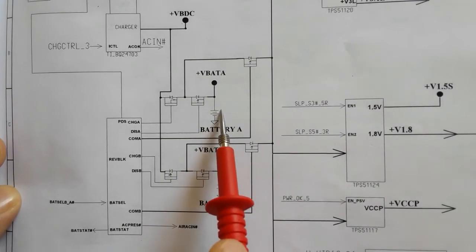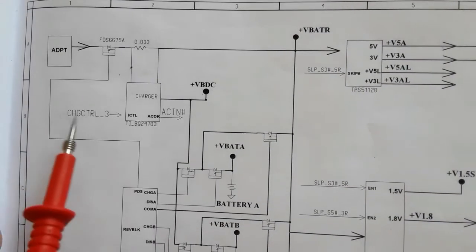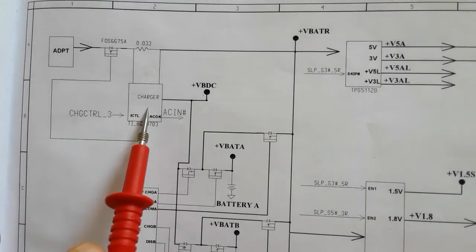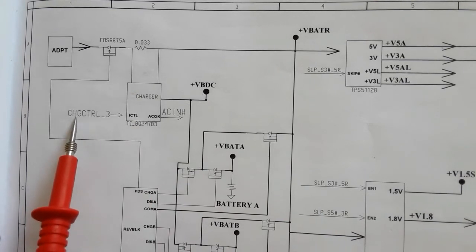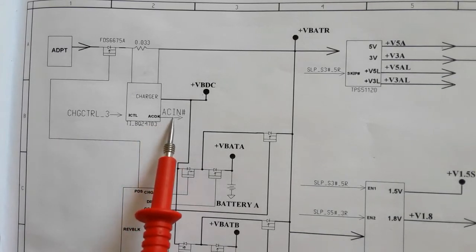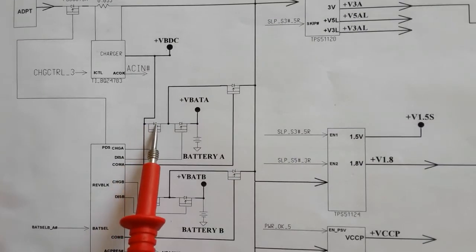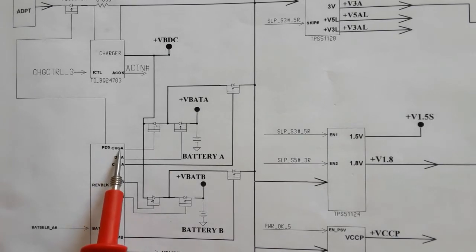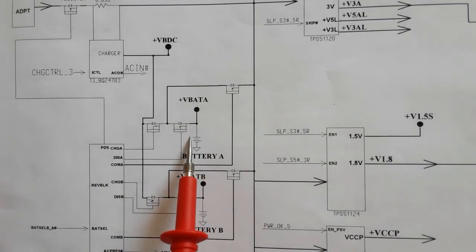The battery needs to be charged. Here is the charge IC. We have the charge control from the EC or Super IO. When this charge control arrives, the charge IC will generate an okay signal and also will generate a charging voltage. This voltage will pass through two MOSFETs, which will be activated by the IC, and then the battery will be charged.